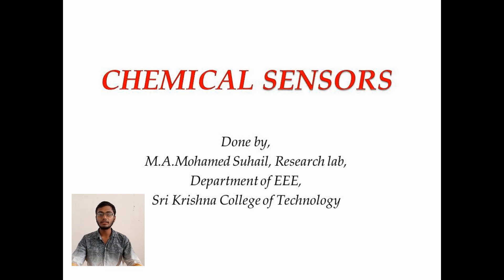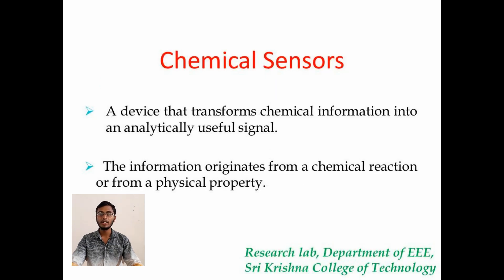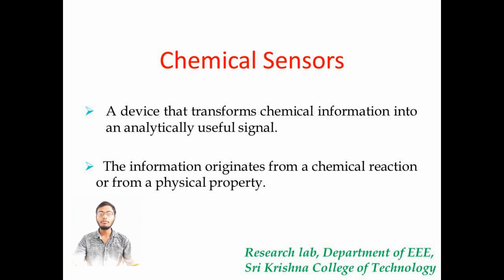A chemical sensor is a device which transmits chemical information from a chemical reaction. The chemical information may be of composition, the analyte present in the solution, concentration or its chemical activity. The chemical information mentioned above may originate from a chemical reaction, from an analyte, or from a physical property of the system.